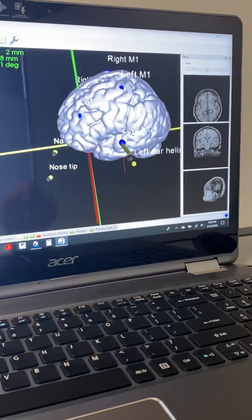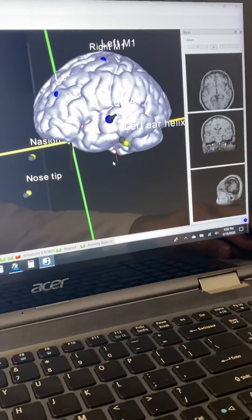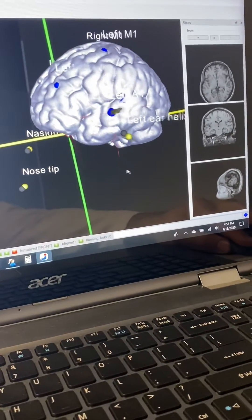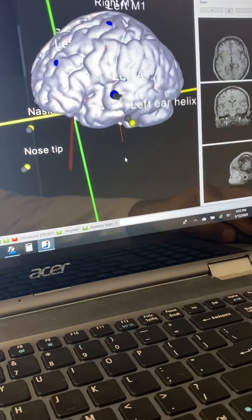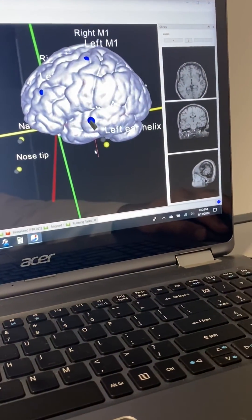Okay, so we are now stimulating the left A1 or Heschel's gyrus in a patient with chronic tinnitus. The navigation software has been processed and the targets have been placed.